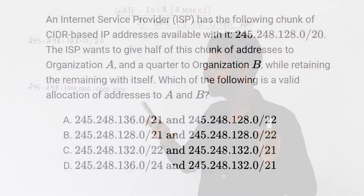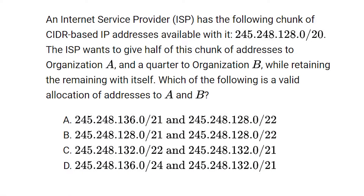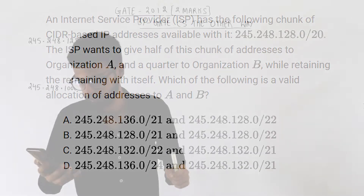The question says: an internet service provider has the following chunk of CIDR-based IP addresses available with it — 245.248.128.0/20. The ISP wants to give half of this chunk of addresses to organization A, a quarter to organization B, while retaining the remaining with itself. Which of the following is a valid allocation of addresses to A and B?